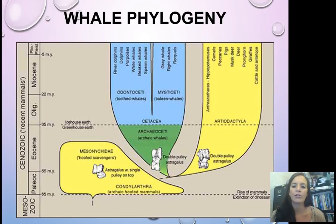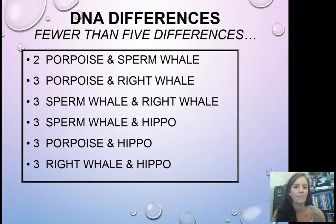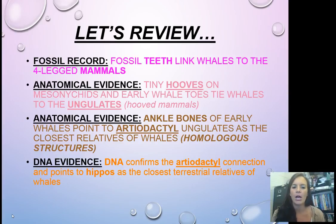So here's a look at the whale phylogeny in general. In the blue you'll see modern-day whales, and on the right and left you have your hooved animals. DNA differences are also something that shows a relationship. A porpoise and a sperm whale have only two DNA differences; a porpoise and a right whale have three differences. Interesting enough, a sperm whale and a hippo also share three differences, the same as a porpoise and a right whale. So pause and write down these four major pieces of evolutionary evidence that link whales to four-legged mammals.